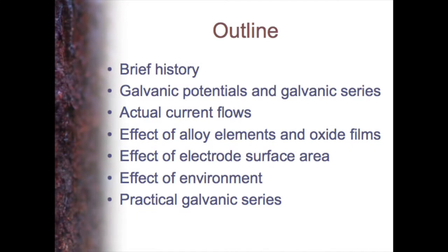So what I want to cover today: just a brief history of galvanic corrosion, and then some of the issues — the potentials and the galvanic series — but then a look in a little bit more detail at what is actually going on with galvanic corrosion: the actual corrosion rates rather than just worrying about the potentials. And then some of the factors that affect the extent of galvanic corrosion — which is a lot more than just potential difference — the alloying elements, the presence of an oxide or passive film, surface area, the environment, and a summary at the end with a practical galvanic series.